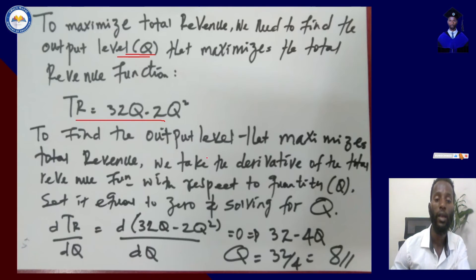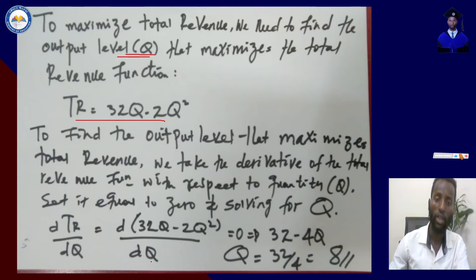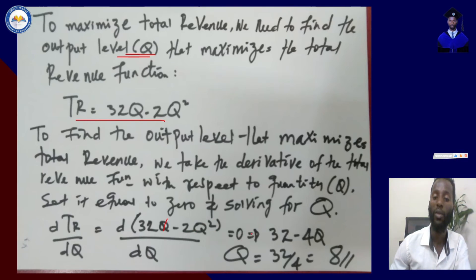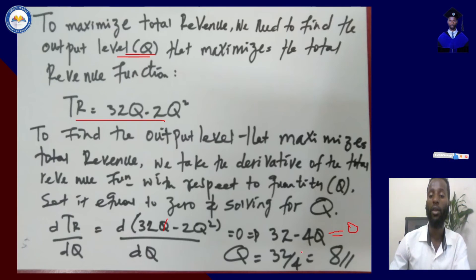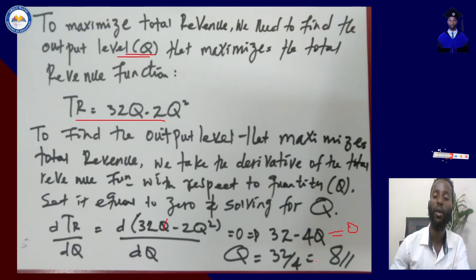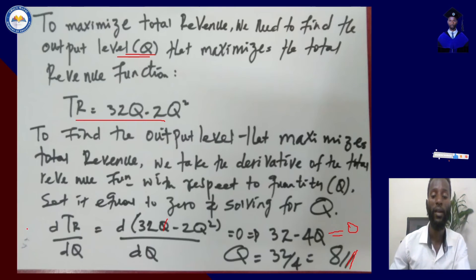The derivative of TR with respect to q: d(TR)/dq equals d(32q minus 2q squared)/dq. Taking the derivative gives us 32 minus 4q, which we set equal to zero: 32 minus 4q equals 0. Solving for q, we get q equals 32 over 4, which is 8. So the output level that maximizes the firm's total revenue is q equals 8.